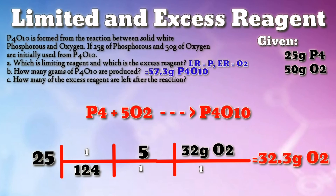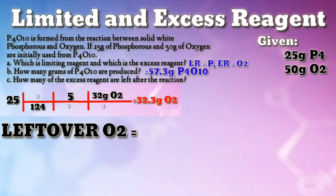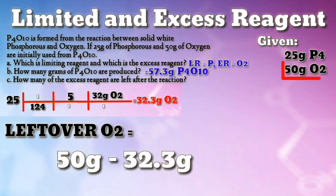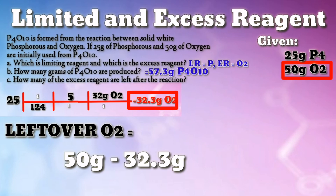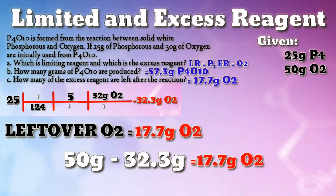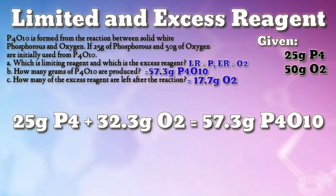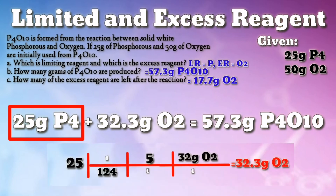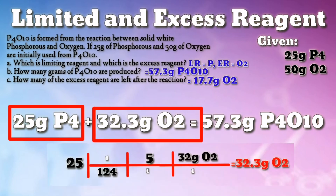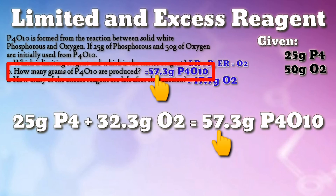Now let's solve how much leftover oxygen gas remains. The excess amount of oxygen gas left is: 50 grams − 32.3 grams = 17.7 grams. That is the leftover oxygen gas. You can also check your answer — the answers are written in the correct number of significant figures. The mass of the limiting reagent, phosphorus (25 grams), and the mass of oxygen gas actually consumed (32.3 grams) add up to the mass of the product, tetraphosphorus decoxide formed (57.3 grams), in accordance with the law of conservation of mass.